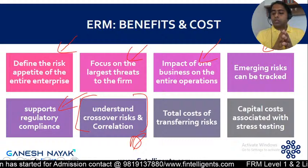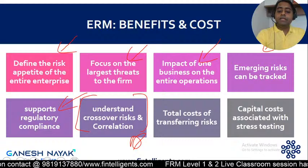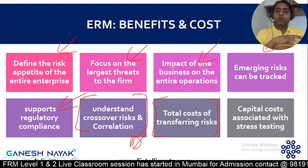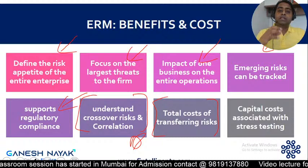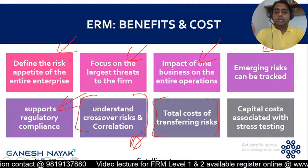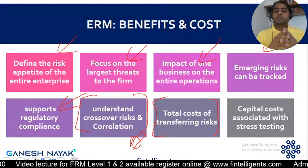Seventh benefit: total cost of transferring risk. In the traditional approach, individual teams took decisions to avoid, transfer, or mitigate risk. Now in ERM, we look at the entire risk and take decisions at the enterprise level, which allows us to reduce the total cost of transferring risk. When taking insurance or agreements in one go, we are able to achieve cost reduction because viewing all risks together provides a diversification benefit, and at the overall level risk is reduced.